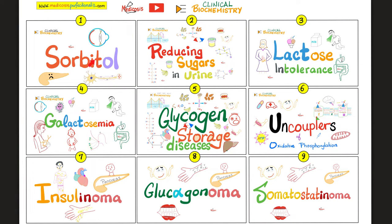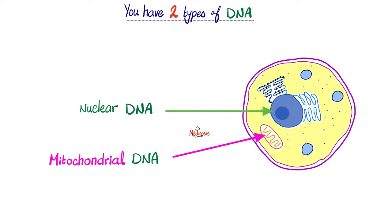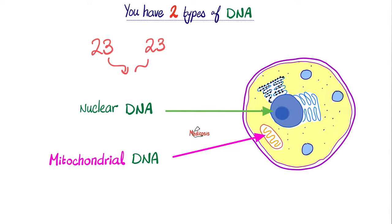Please watch the videos in this clinical biochemistry playlist in order. Remember, you have two types of DNA: the DNA that's in the nucleus — of course you have heard of this — and mitochondrial DNA in your mitochondria. Where did my nuclear DNA come from? Half of it from mommy and half of it from daddy, because the ovum had 23 chromosomes, and the sperm had 23 chromosomes, and now your nucleus has 46 chromosomes.